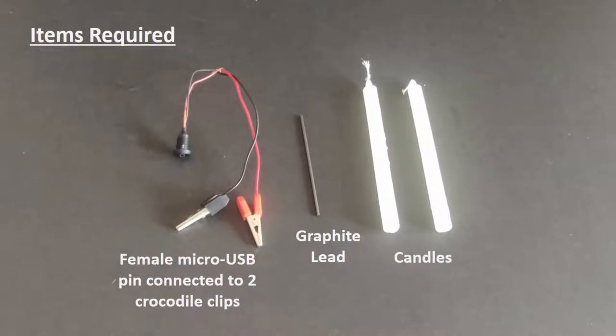For this we will need a graphite pencil lead which will act as the conductor, two candles, and two crocodile clips connected to a female micro USB pin. We will need a power source — we are using the female micro USB pin connected to a mobile charger with a male USB pin.